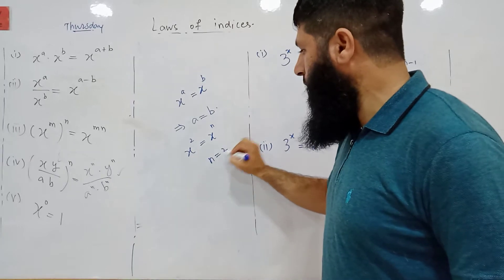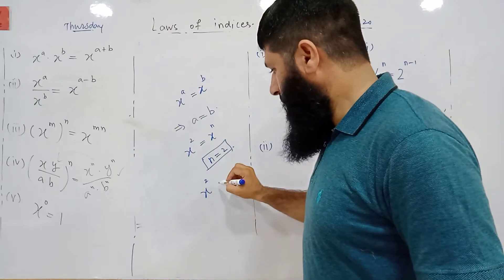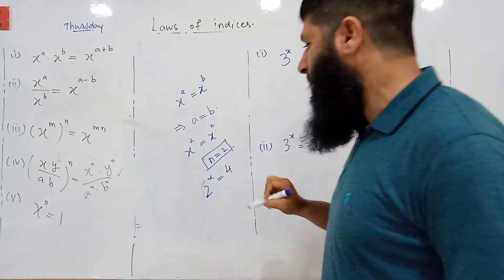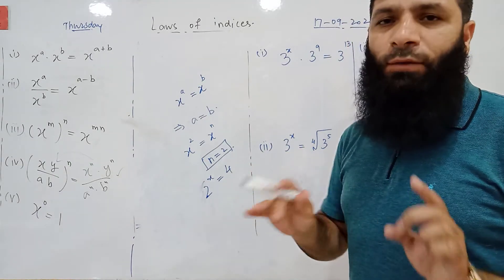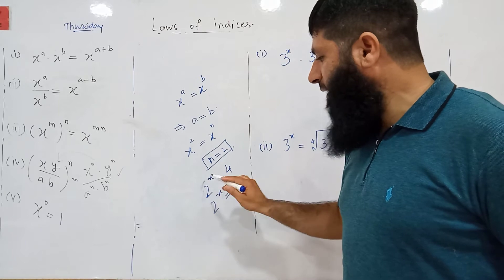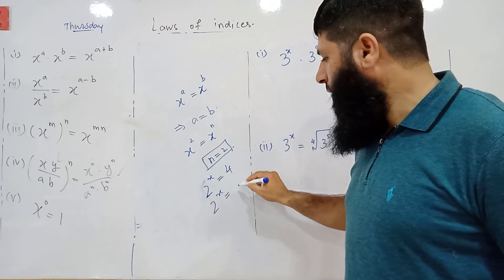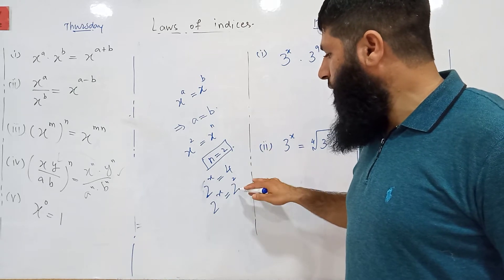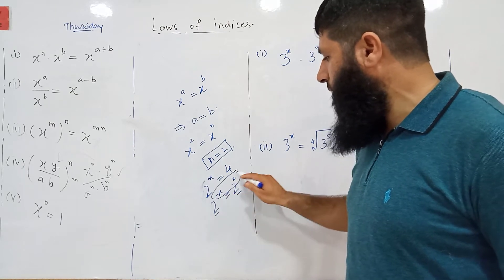Similarly, if you have 2 raised to power x is equal to 4 and you are supposed to find the value of x — if you have the same base on both sides you will have equal indices. On the left hand side the base is 2, so you will try to make the same base on the right hand side. You can write 4 as 2 squared. Now both bases are equal, so the indices will also be equal: x is equal to 2.